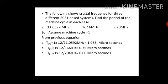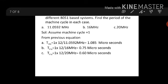For case B: 1 × 12 divided by 16 MHz gives 0.75 microseconds for executing the particular instruction. For case C: T_instruction = 1 × 12 / 20 MHz = 0.60 microseconds for one machine cycle of an instruction.